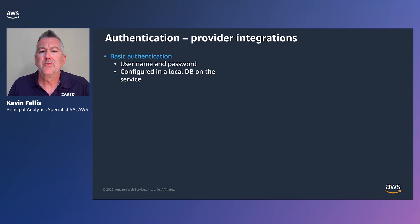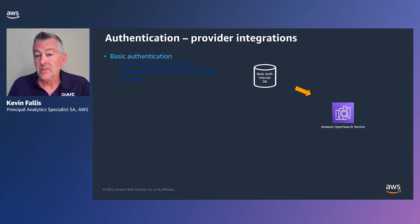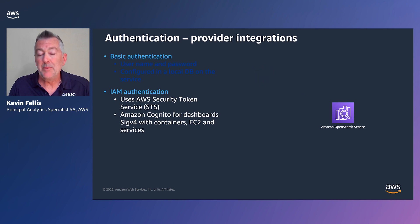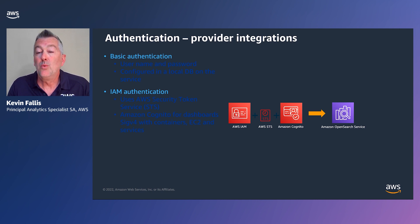From an authentication perspective, there are three provider integrations. The first is basic auth — a username and password in a configured local database that gives you some level of security above and beyond no authentication. You put a user in that basic auth database and then sign on to the Amazon OpenSearch service or programmatically use those credentials to interact with the data. Next, there is IAM authentication, which is typically leveraged with Cognito, but you can also use it for SigV4 request signing from your programmatic processes. An AWS IAM identity is defined, it uses STS to generate credentials and tokens, and then Cognito forwards that to the Amazon OpenSearch service where SigV4 request signing is performed, enabling a secure solution using IAM authentication.